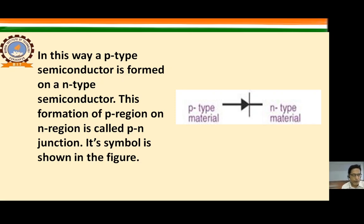This formation of a p-region on an n-type semiconductor is called a p-n junction. Its symbol is shown in the figure, where the vertical line represents the junction, the p-type material is on the left side, and the n-type material is on the outside right.